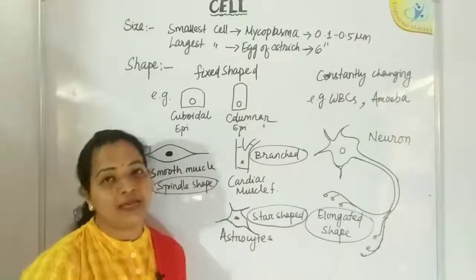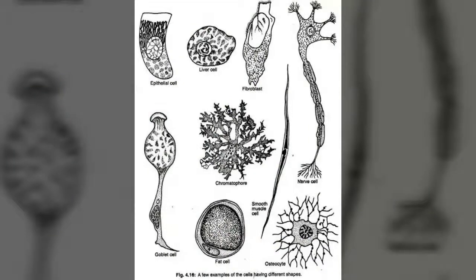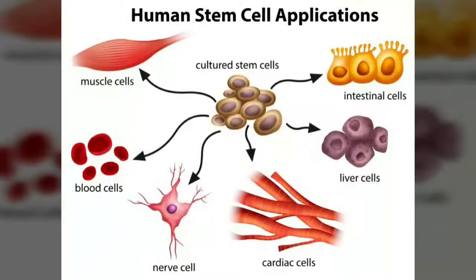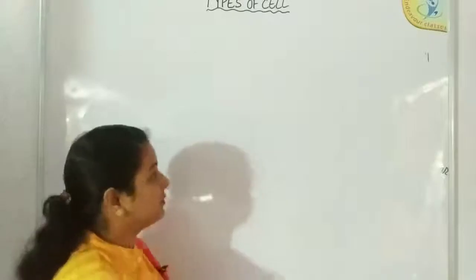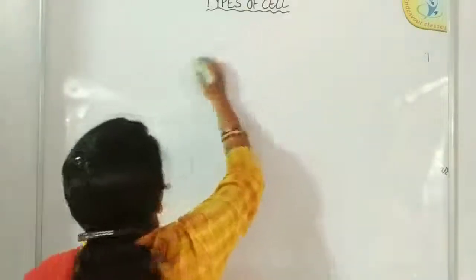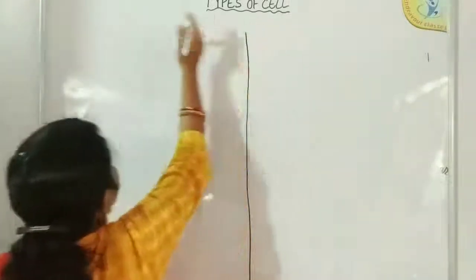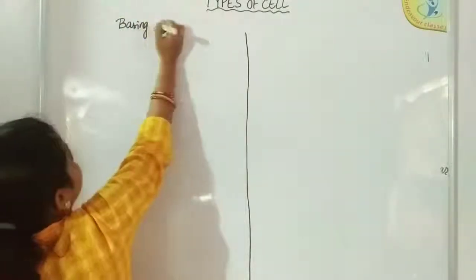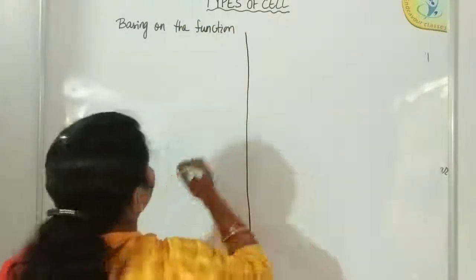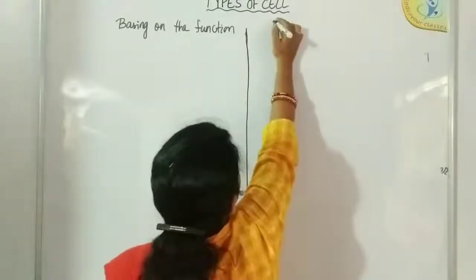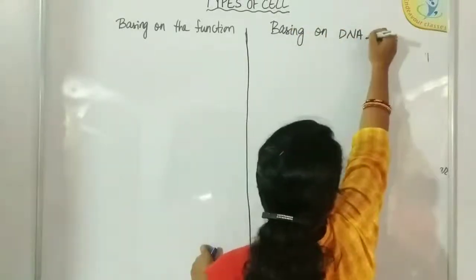Next we will move to different types of cells. We will discuss cell types based on two criteria: on the left, types based on distribution of function; and on the right, types based on DNA and nucleus.